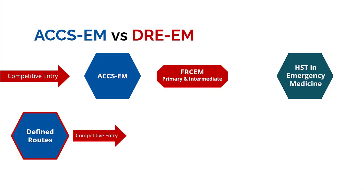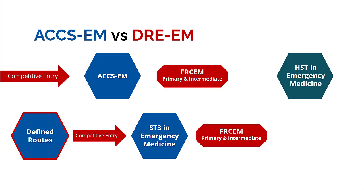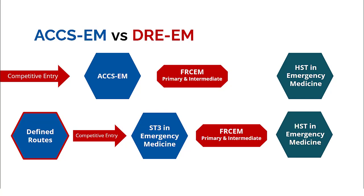With the Defined Route, you do competitive entry into ST3 level. ST3 here is not strictly one year — rather, they observe you for 18 to 24 months and assess whether you have achieved all competencies required to apply for ST4. In this ST3 period, you're given the opportunity to complete your FRCEM primary and intermediate and achieve all the competencies that an ACCS-EM trainee would have achieved. It's an equivalent route — ACCS-EM is a full three years, but ST3 via DRE-EM will not be three years because you already have experience from your defined route background.